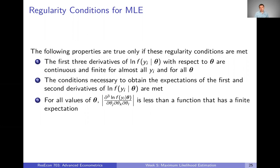Everything I'm going to describe here is true only if these three regularity conditions are met. First, three derivatives of the log likelihood of the log of the PDF with respect to theta are continuous and finite for almost all Y and for all theta. The conditions necessary to obtain the expectations of the first and second derivatives of the log of the PDF are met. And for all values of theta, the absolute value of this third derivative is less than a function that has a finite expectation.